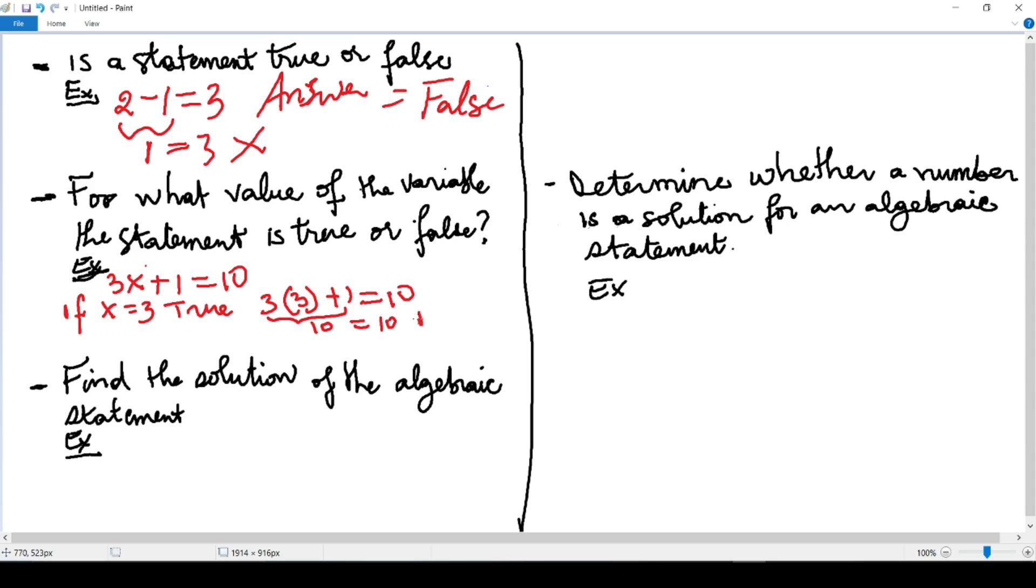For what value is it false? I can choose any value. If x equals, let's say, 2, that's false because I will have 3 times 2 plus 1 equals 10.